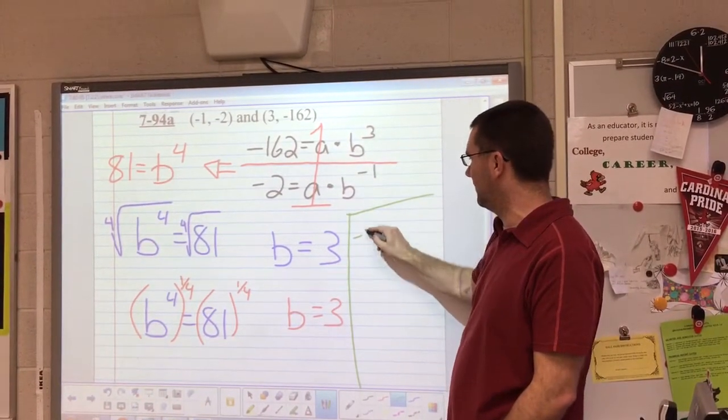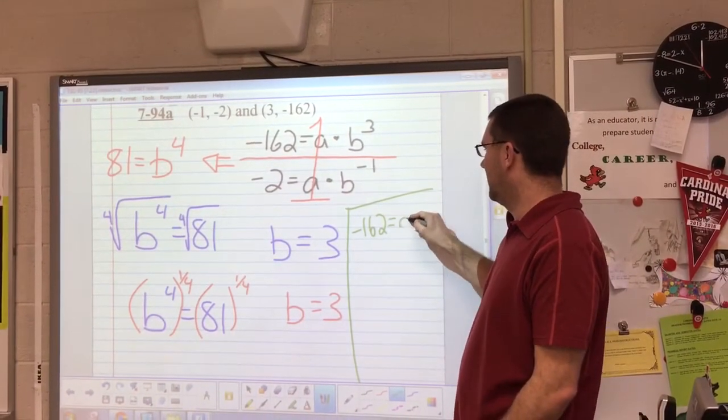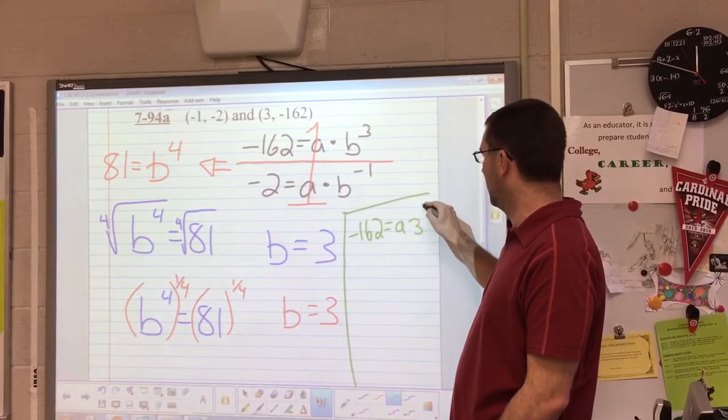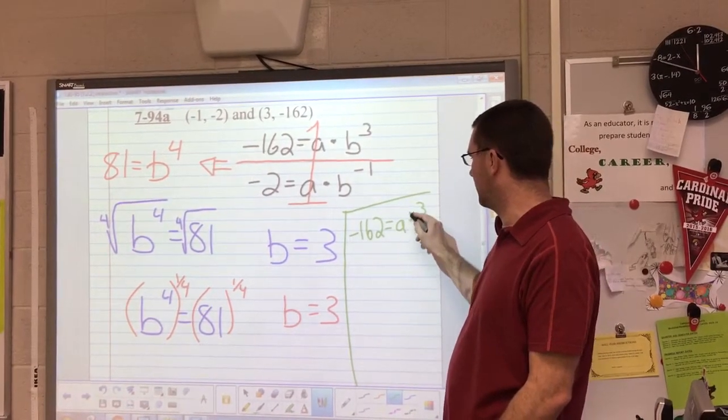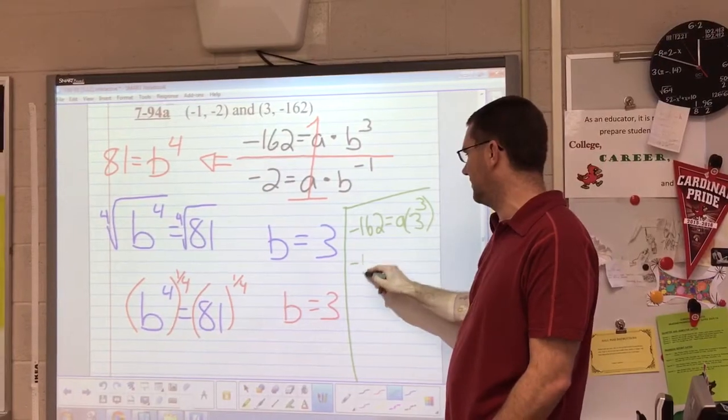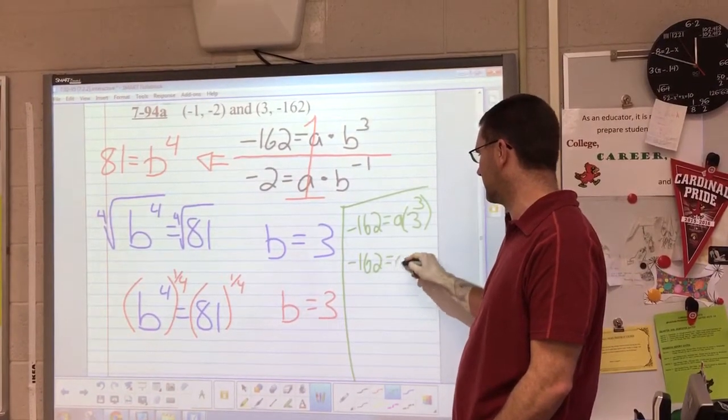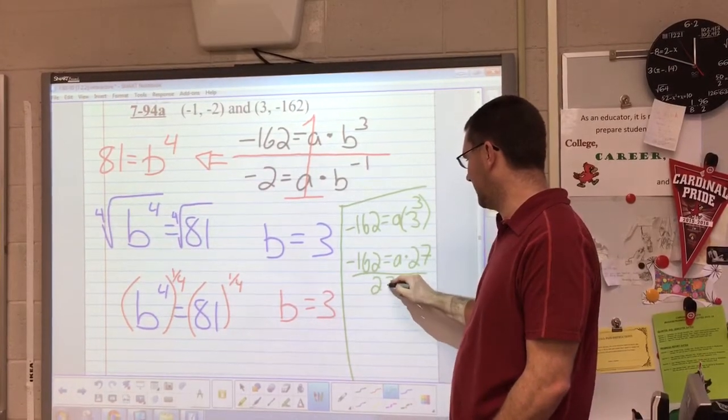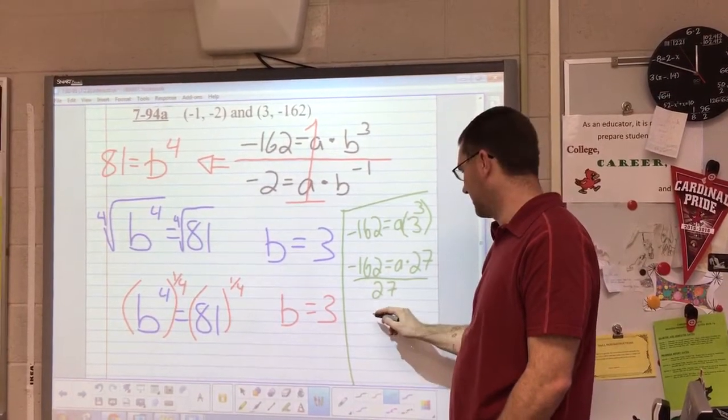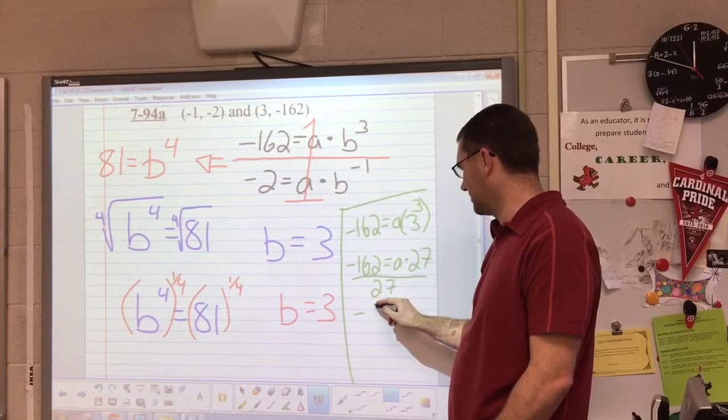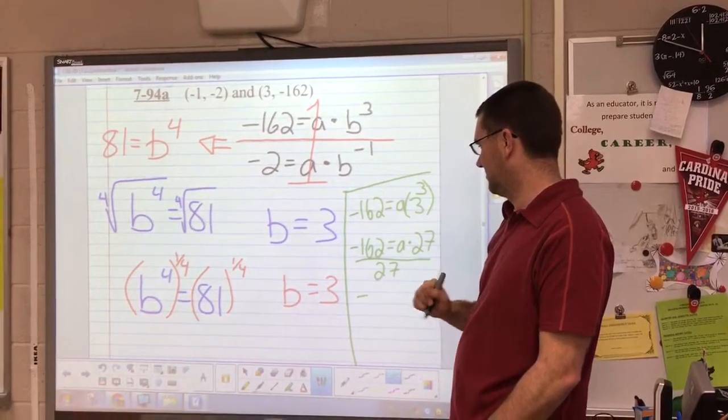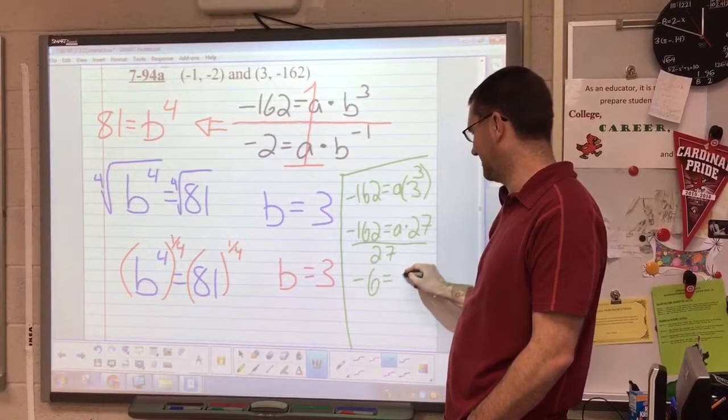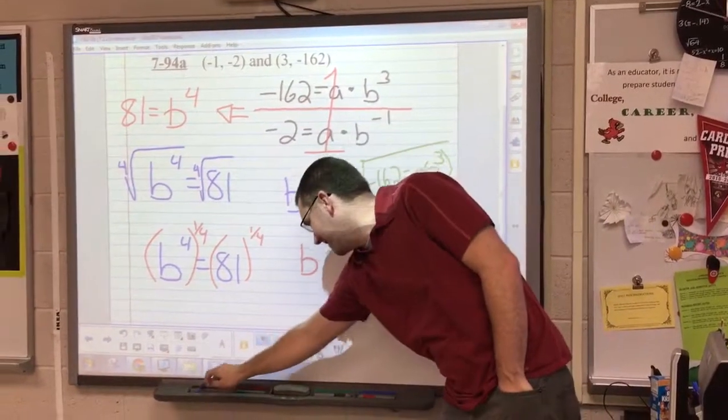So 3 to the third is 27, so negative 162 equals a times 27. Divide by 27 and you get negative 6 equals a. Don't forget at the end to write your final equation.